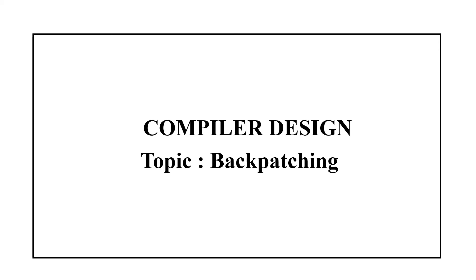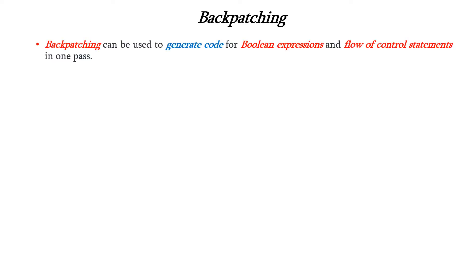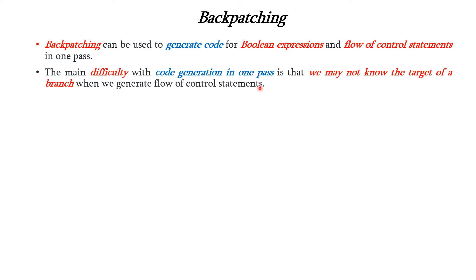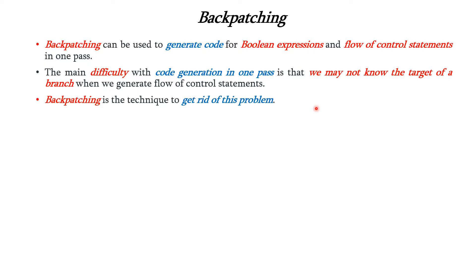In this lecture we are going to discuss the concept of backpatching in compiler design. Backpatching is the concept used to generate code for boolean expressions and flow of control statements in one pass. The main difficulty with code generation in one pass is that we may not know the target of the branch instruction when we generate the flow of control statements. Backpatching is the technique which gets rid of this problem.